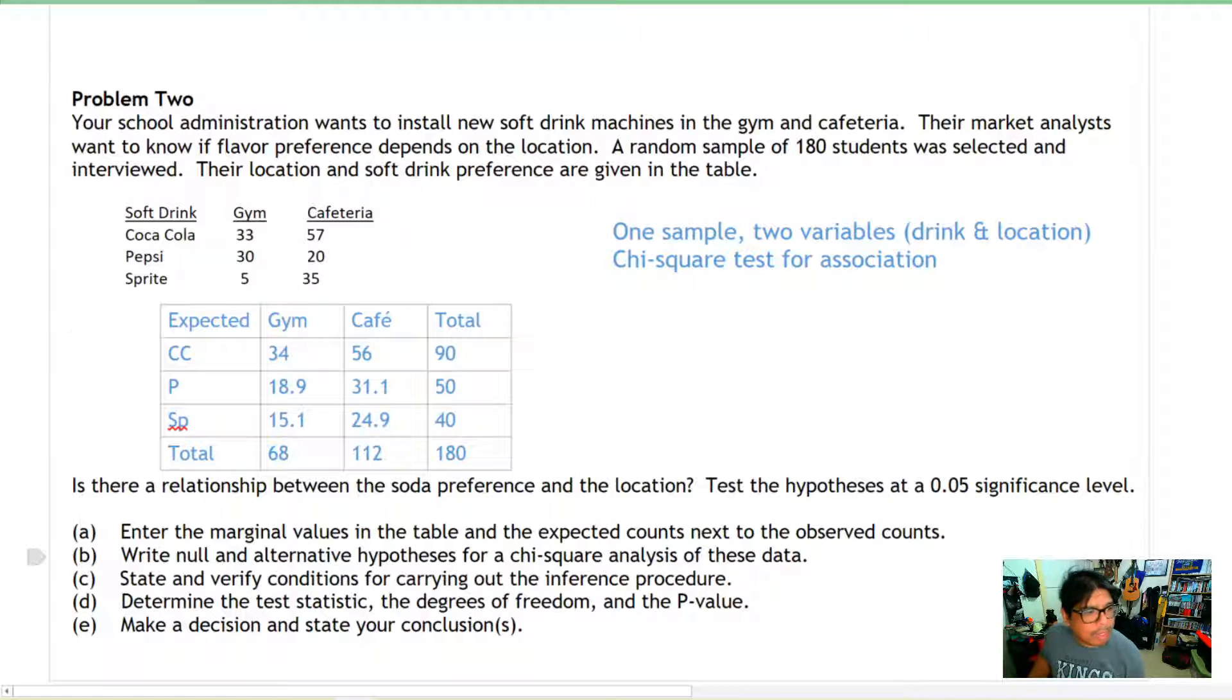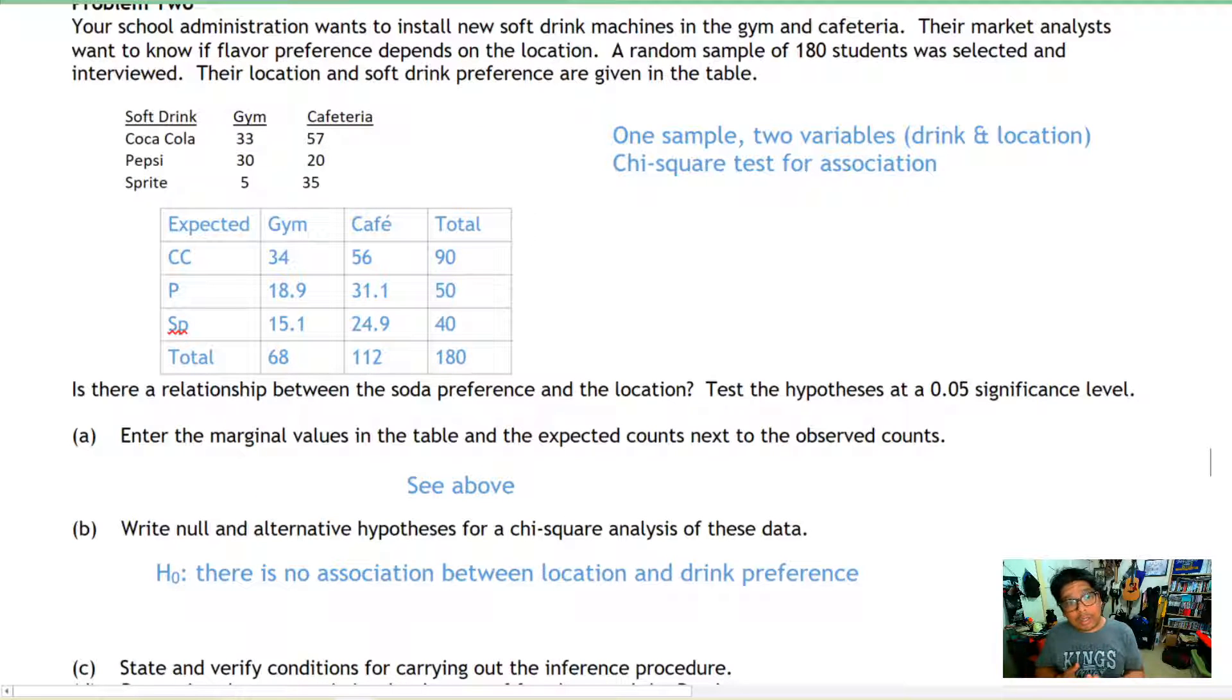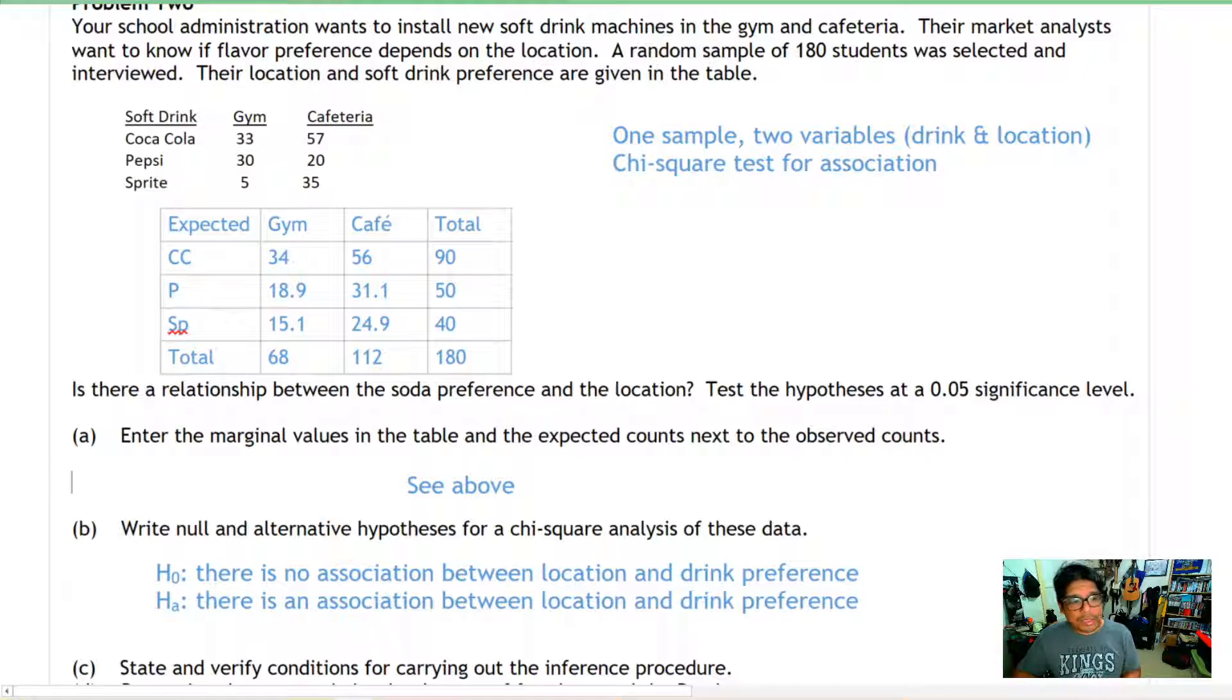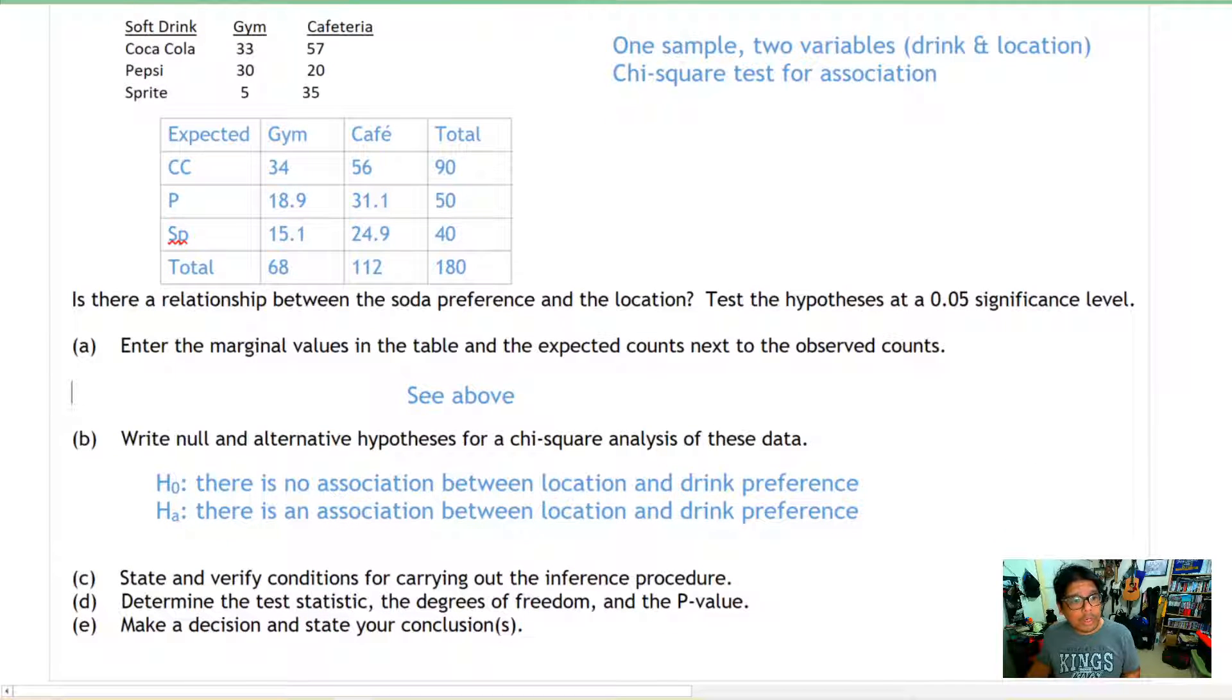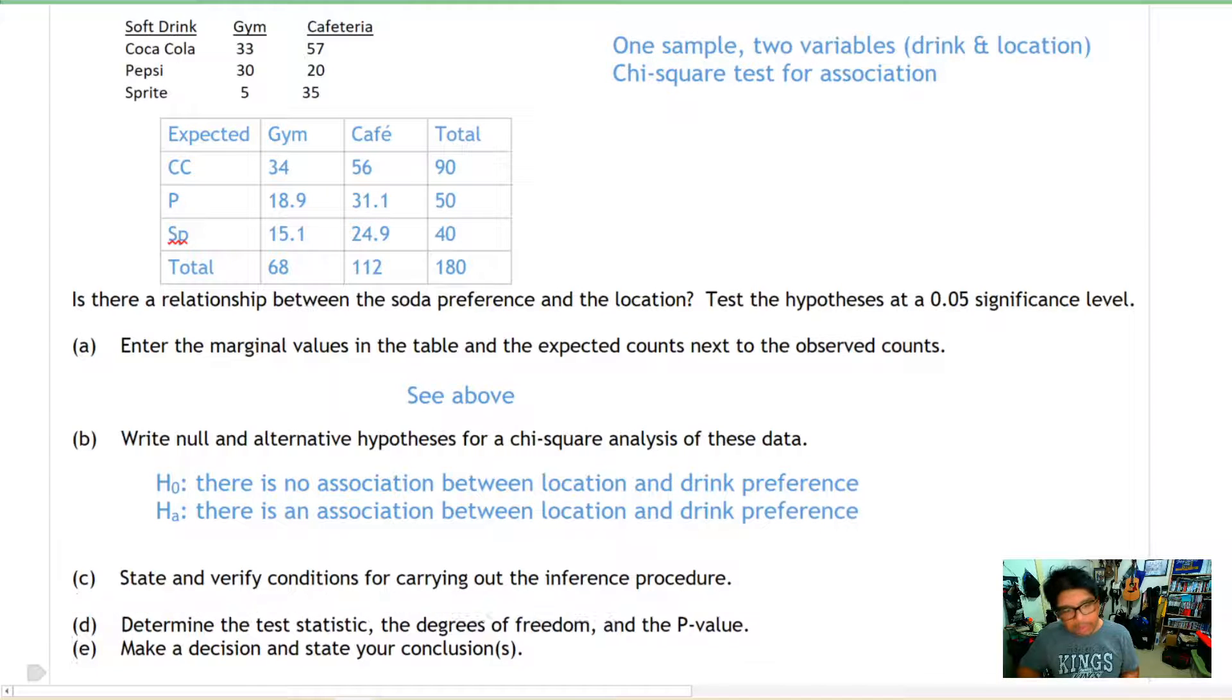Letter B, write the null and alternative hypothesis for a chi-square test for association. The null hypothesis is always there is no association between the two variables. In this case, there is no association between location and drink preference. The alternative hypothesis is there is an association between location and drink preference.